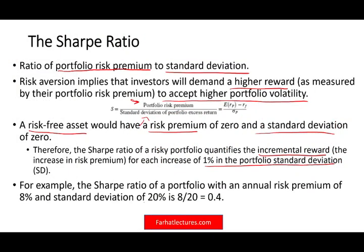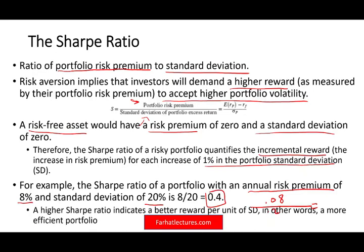Let's take a look at an example. The Sharpe ratio of a portfolio with an annual risk premium of 8% and a standard deviation of 20%: in the numerator we have 0.08 and the standard deviation is 0.2, which gives us a Sharpe ratio of 0.4 or 40%. A higher Sharpe ratio indicates a better reward per unit of standard deviation. If I'm making 10% using the same standard deviation of 0.2, my ratio equals 0.5 — I'm making more return given the same risk of 20%. So this is what the Sharpe ratio measures for us.